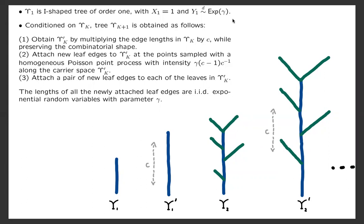Conditioned on ε_k, tree ε_(k+1) is obtained in the following three steps. First, you scale the tree ε_k by c, that is you multiply each edge length in the tree by c, and obtain the tree ε_k'.